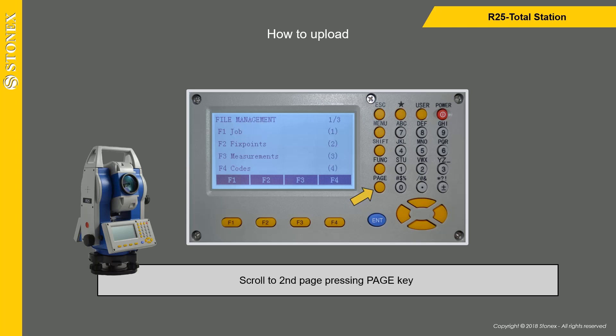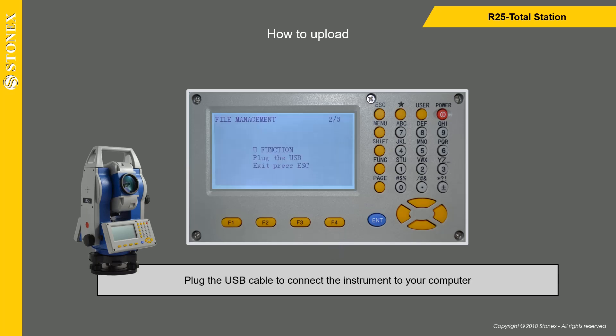Press Escape to go back to the file management menu. Scroll to the second page by pressing the page key, then press F4 to select the USB option. Plug the USB cable to connect the instrument to your computer.